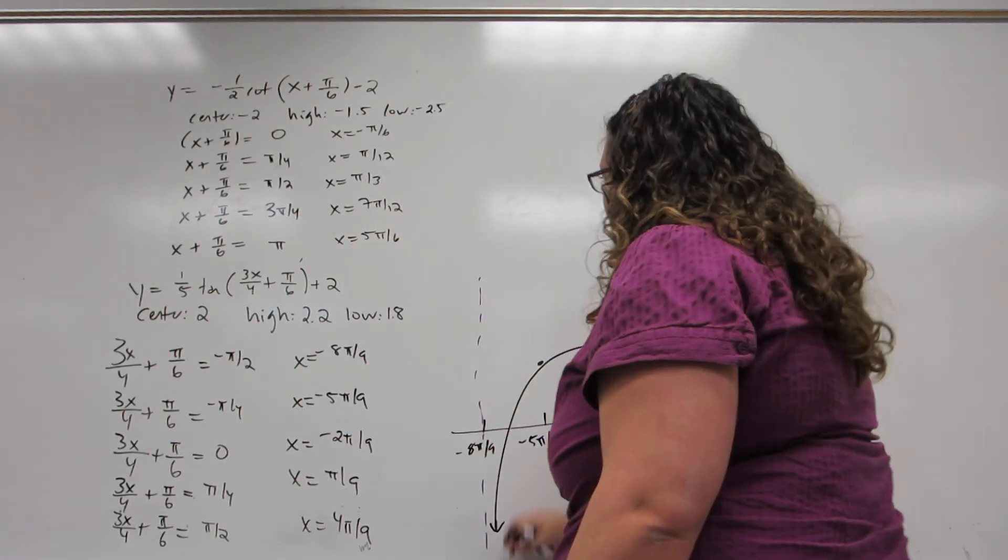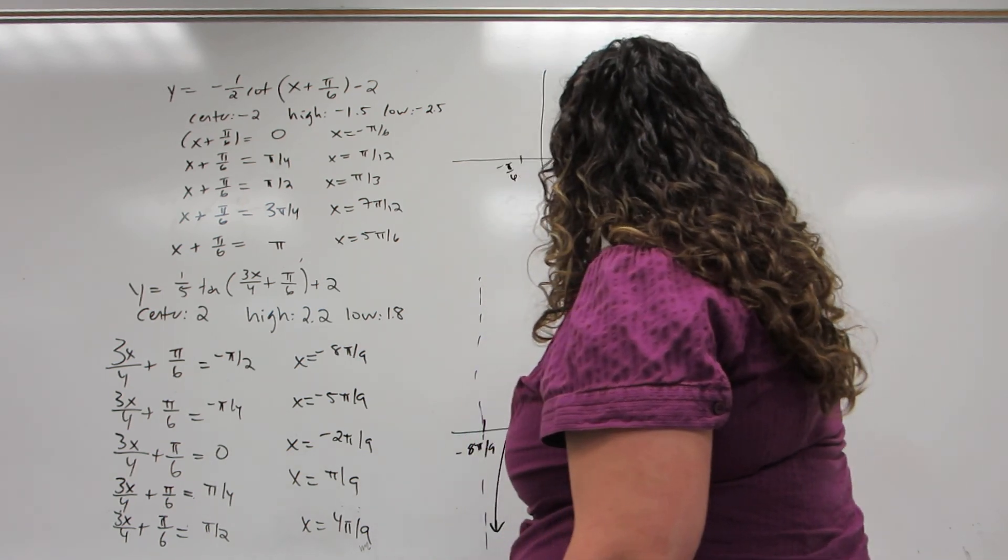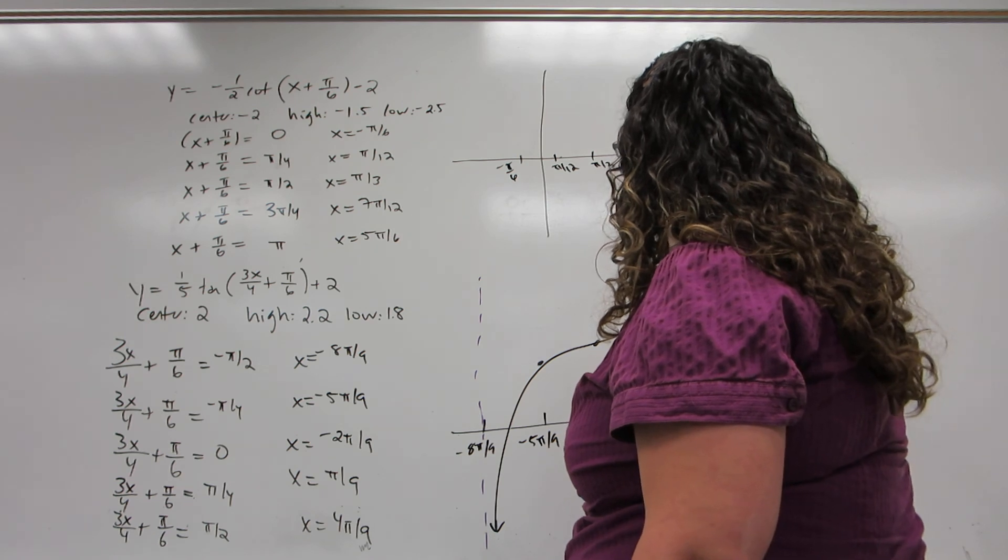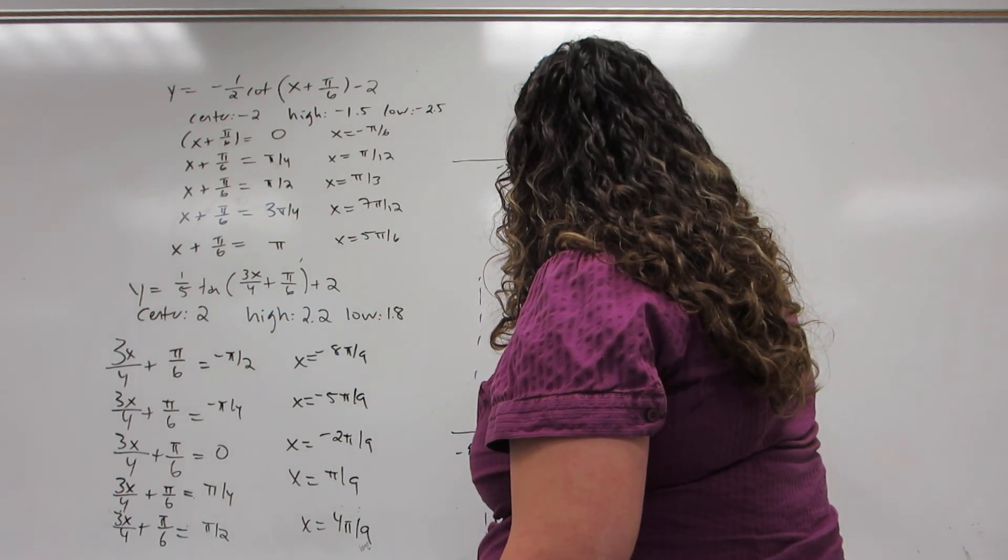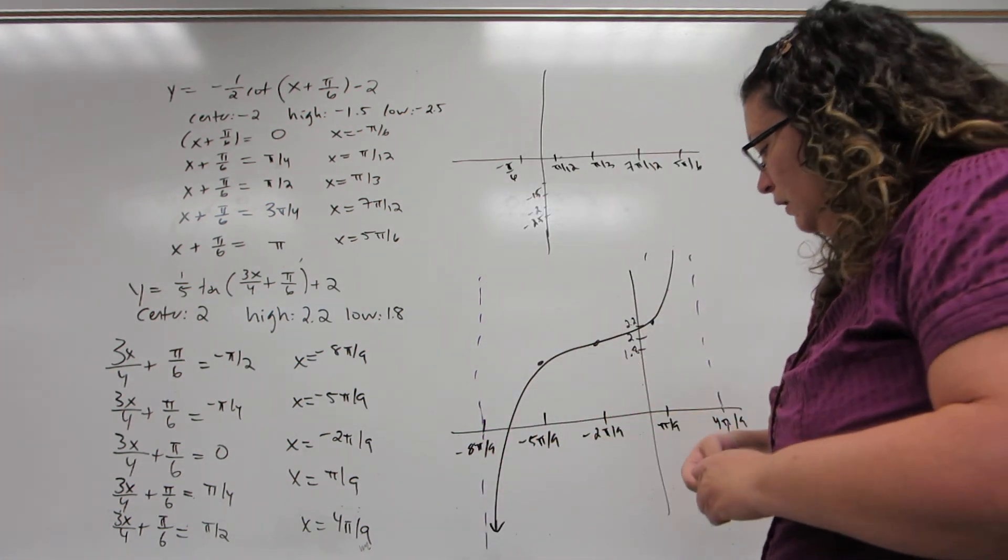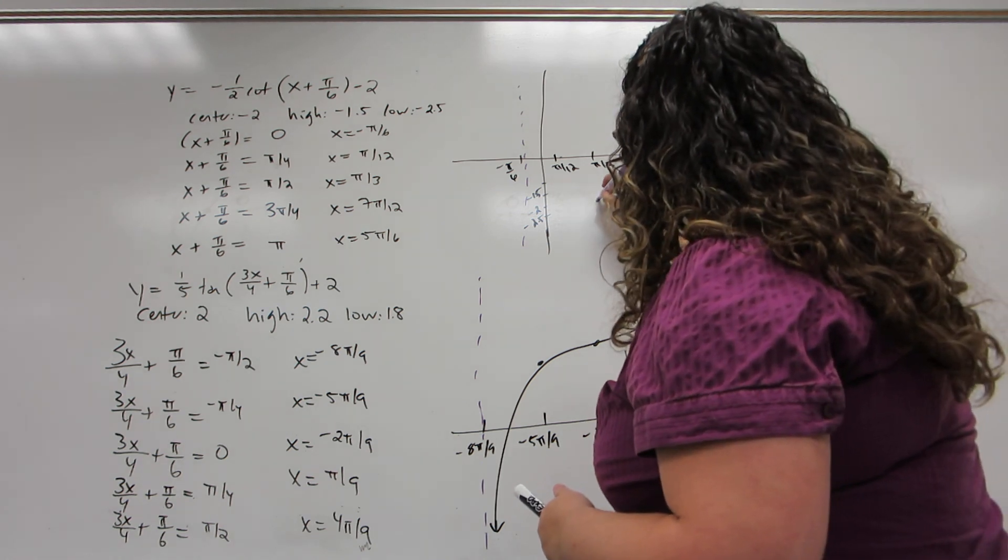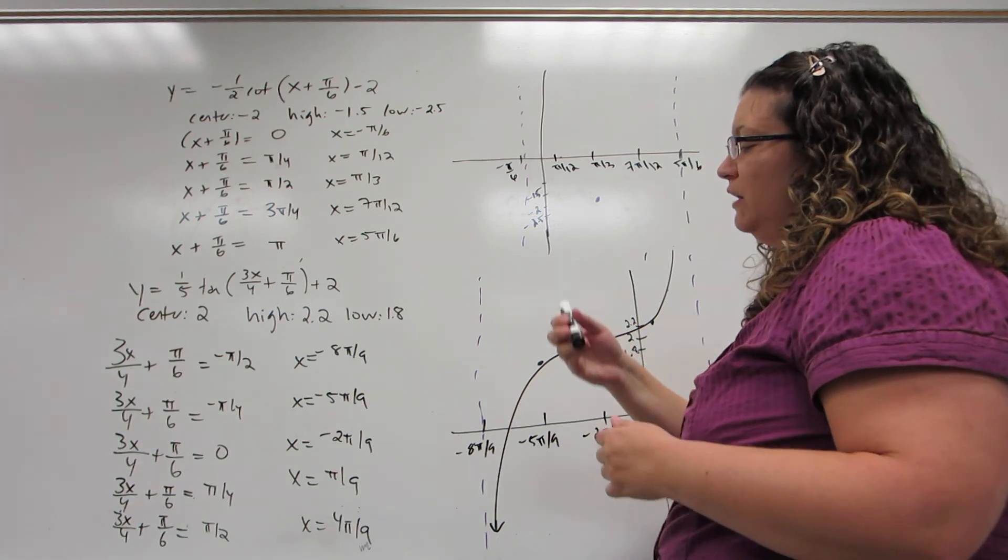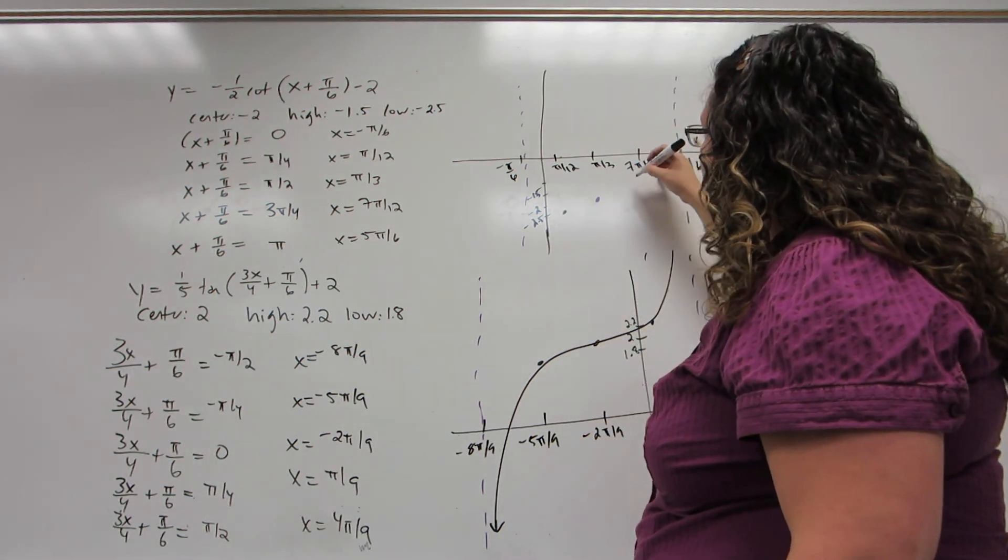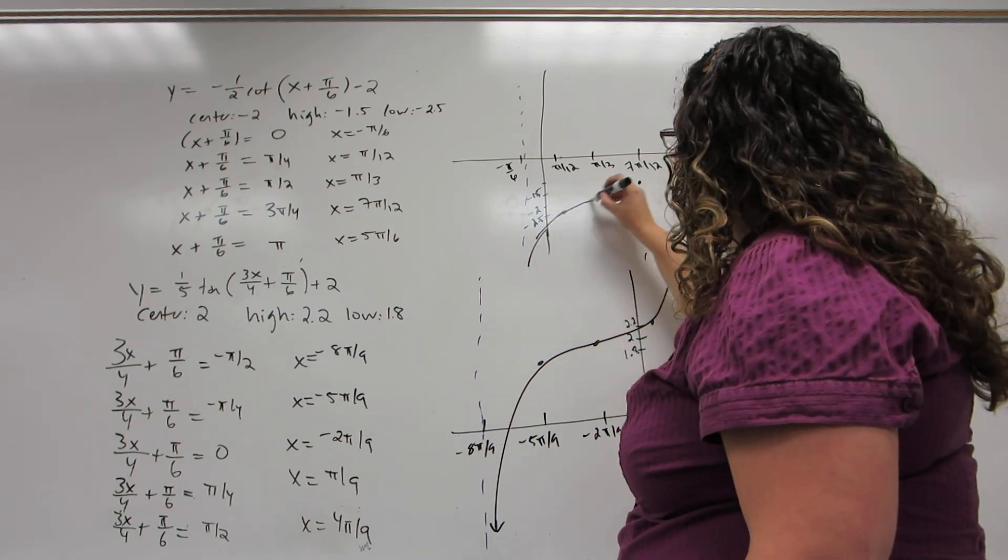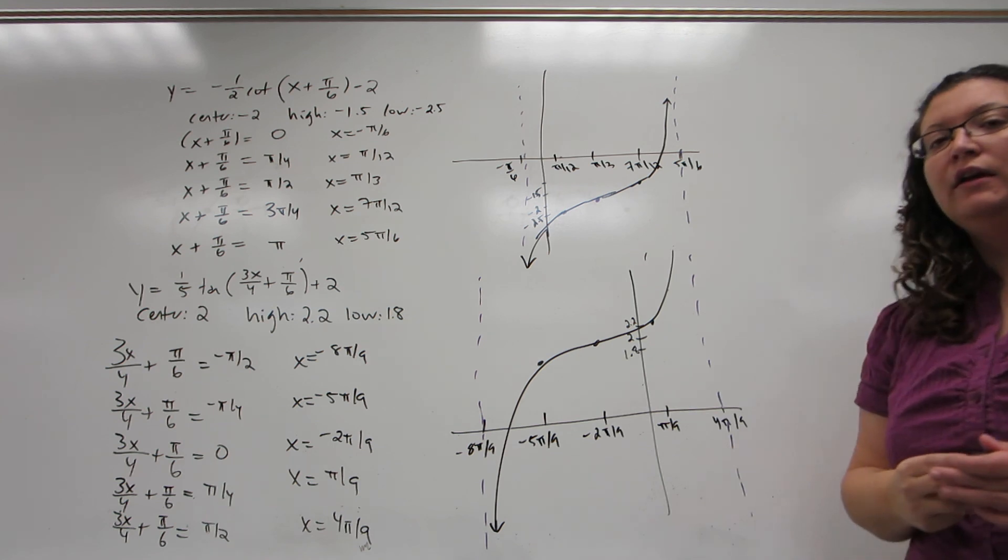Now we move to the graph. Just like with tangent, my asymptotes are the first and last special point. And the center one has a y-coordinate at the center. Now here's where I need to remember that I'm doing a negative cotangent graph. Traditionally cotangent moves down, but negative cotangent moves up. So the first quarter point is low, the third quarter point is high. It's still a relatively curvy graph because the amplitude of 1 half is small, but it's not quite as curvy as the one with amplitude 1 fifth.